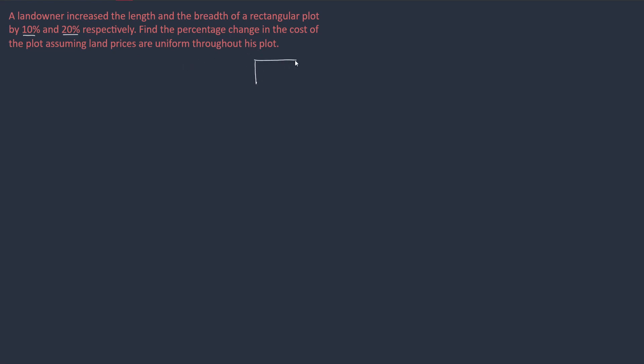Let's assume this is a plot and in this plot the cost is uniform. Let's assume the area of the plot is 100 cm square and the cost of this plot is 100. How can we get this area? By simply 10 into 10. Let's take length 10 and breadth are also 10.